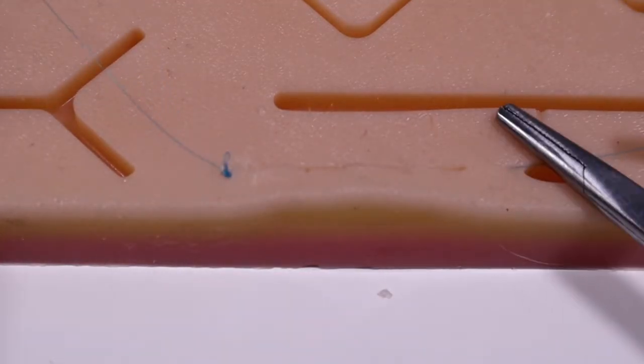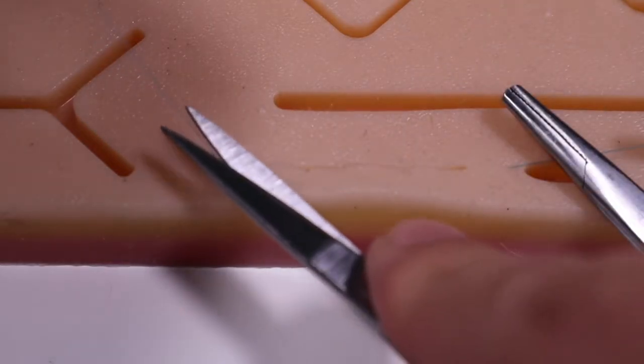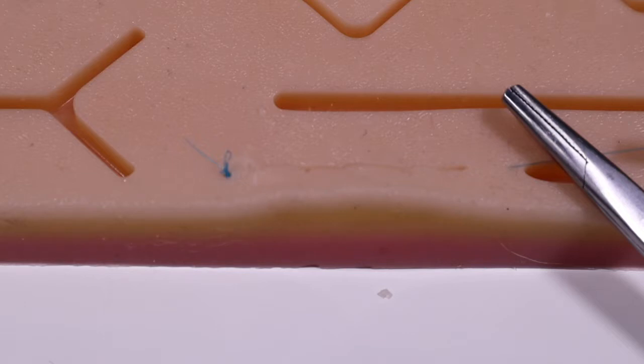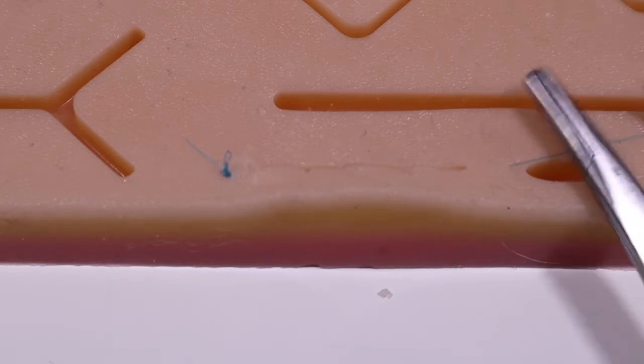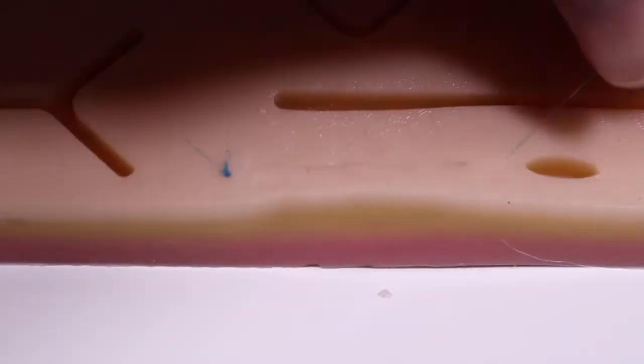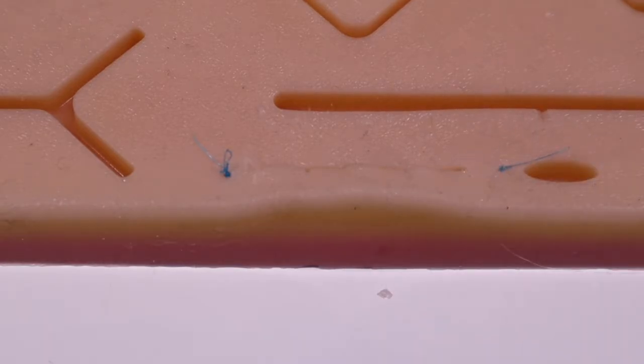So once you have that done on one side, you can clip that tail off approximately a centimeter, to allow for easy removal. And then you can do the very same thing on the near side, or your entrance side. And there's your subcutaneous running suture with knotted anchors.